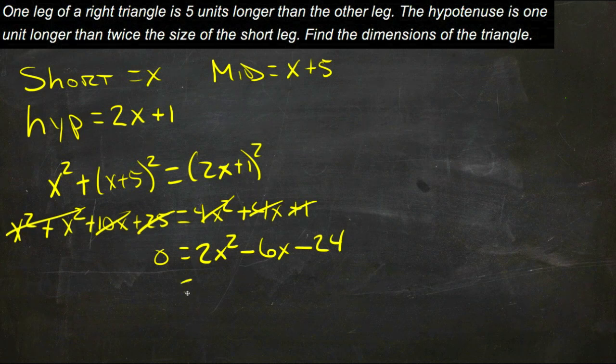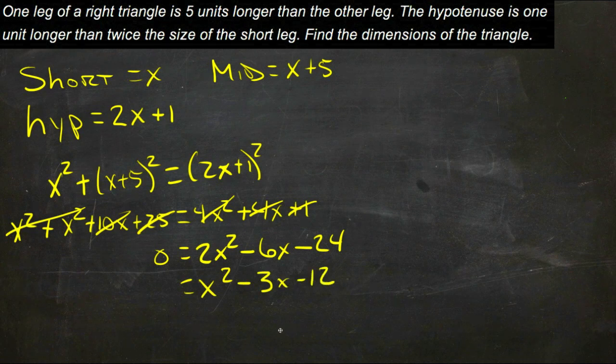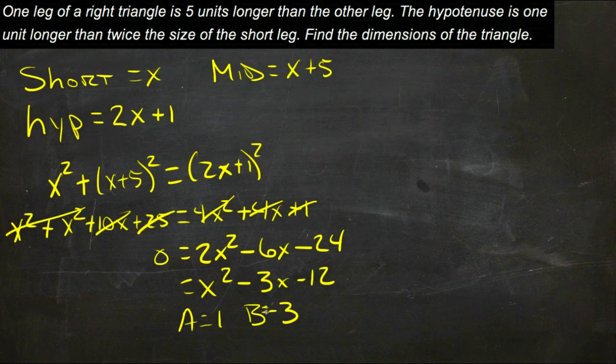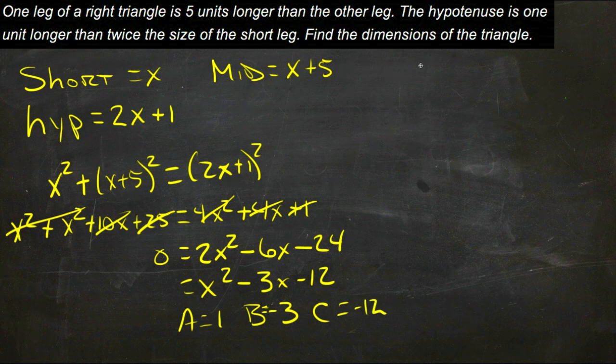Divide everything by 2, and we'll get x squared minus 3x minus 12, then we can plug our three values for a being 1, b being negative 3, and c being negative 12 into the quadratic formula.